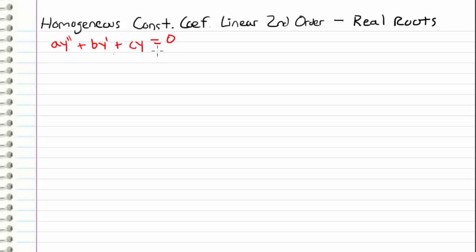It's homogeneous because it is all set equal to 0. It is constant coefficient because we are assuming that a, b, and c are constants — they are not functions of x and they are not functions of y, which also makes it linear. And of course, it's a second order differential equation because the highest order derivative is y double prime.